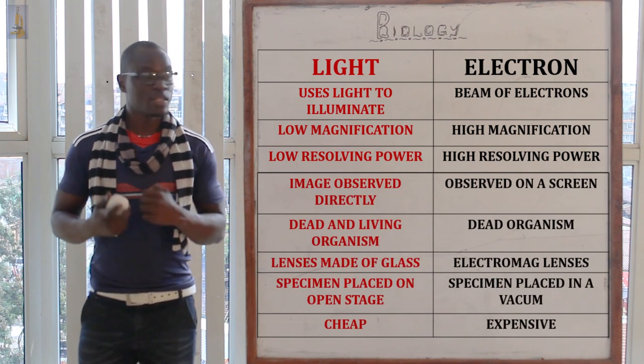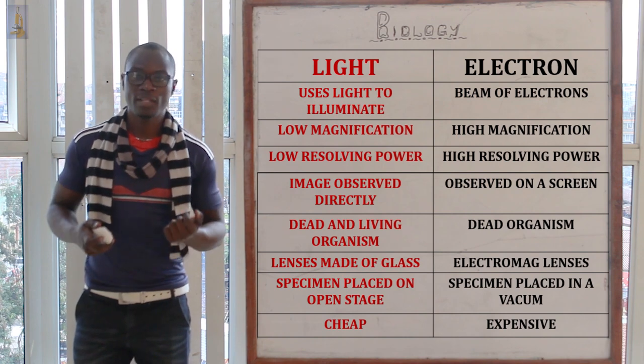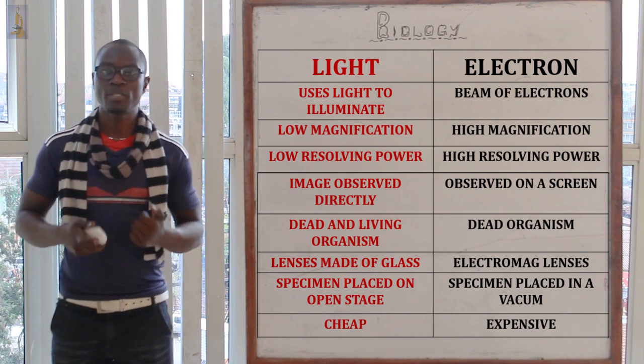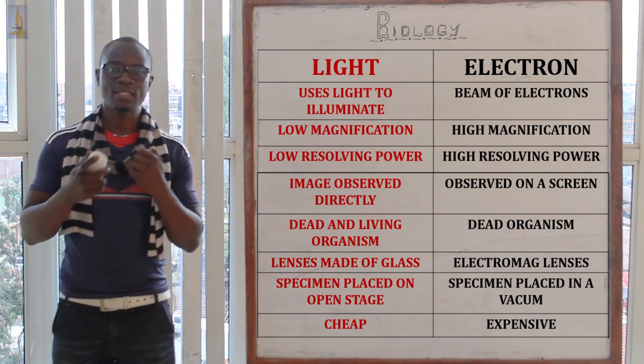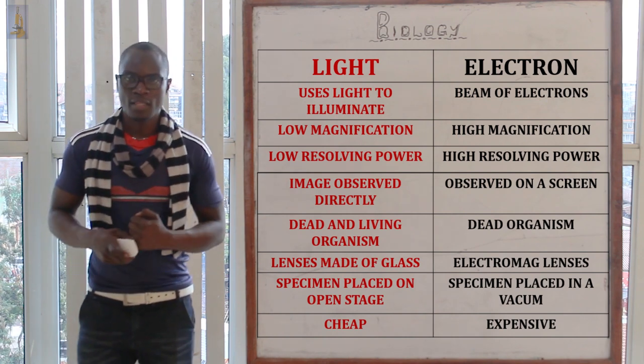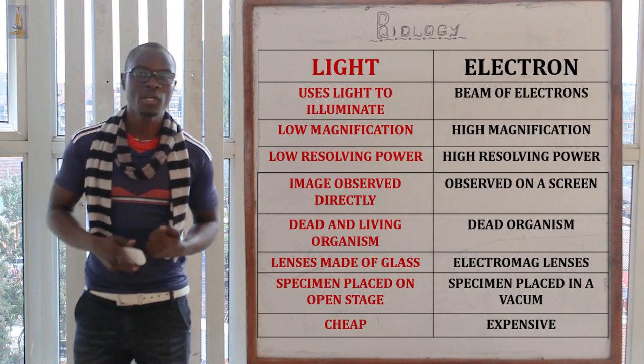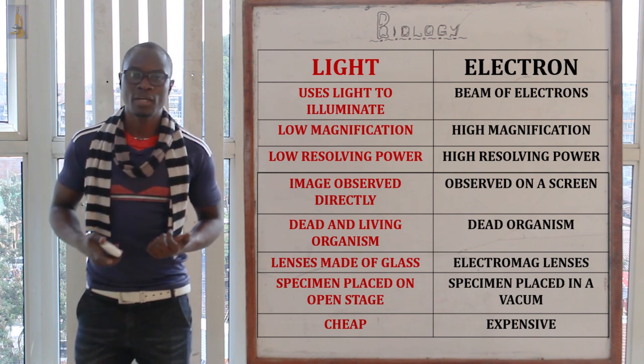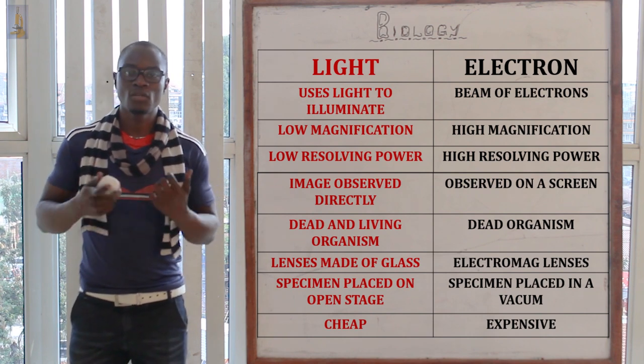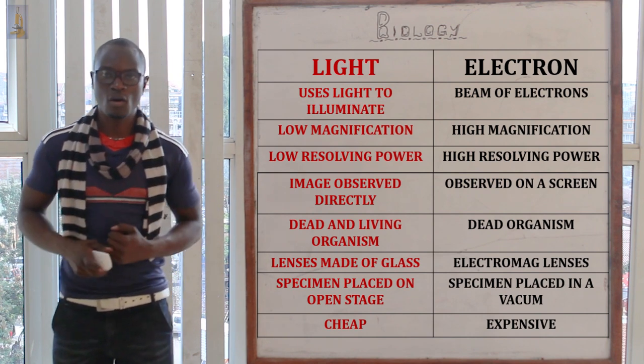In the light microscope the lenses are made of glass, while in the electron microscope the lenses are made of electromagnetic material. The specimen in the light microscope is placed on the stage, while in the electron microscope it is placed in a vacuum chamber. The light microscope is very cheap and common, while the electron microscope is very expensive and not as common.